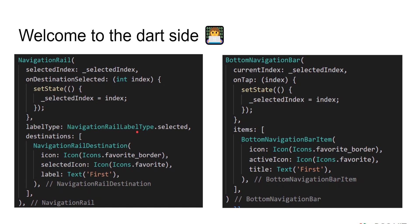It has an additional parameter called label type, which defines the label behavior. You can either choose to hide all the labels, show all the labels, or only show the label of the currently active tab, which is what I have done here.